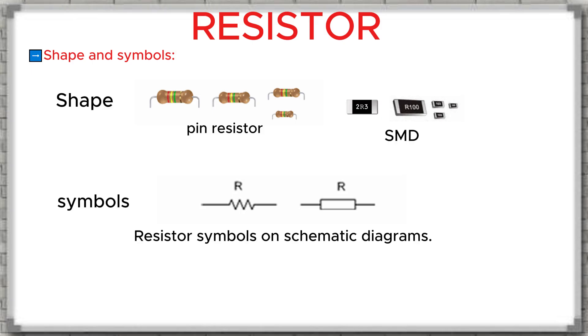Commonly in modern ECUs, we often see two types of resistors: plug-in through-hole resistors, and SMD (surface-mount) resistors.